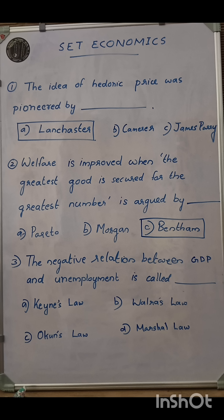Second question: welfare is improved when the greatest good is secured for the greatest number — this is argued by Bentham. Third question: the negative relation between GDP and unemployment is called Okun's Law. So these are the three questions we discussed here.